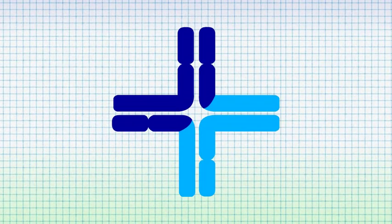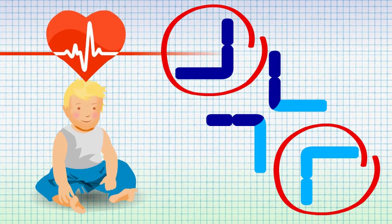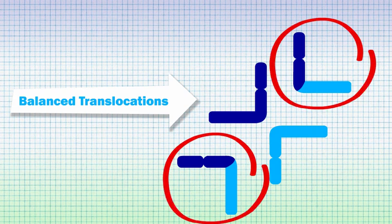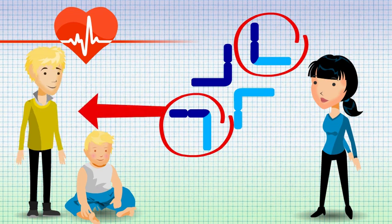In this example, the two healthy chromosomes could be passed on and the child would be healthy. If the two balanced translocations are passed on, the child would be healthy, assuming the parent with the translocation was also healthy.